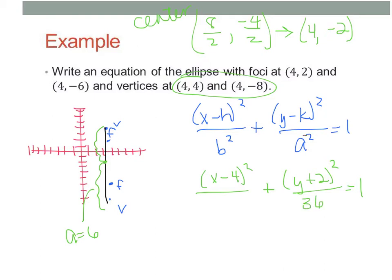But then the other thing it's going to give me is my c value. So this is c, so we go from negative 2 to positive 2, that's going to be 4. So, c is 4. For an ellipse, it's c squared equals a squared minus b squared.